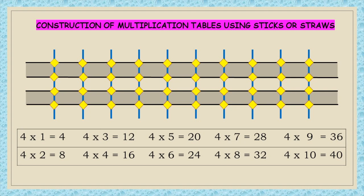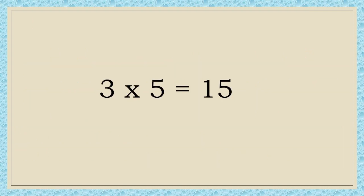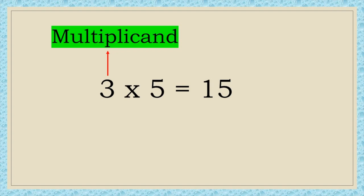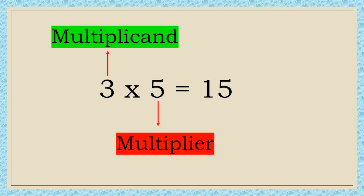Similarly, you can construct the table of five, six, and so on. Any number that is before the multiplication sign is called the multiplicand. Any number after the multiplication sign is called the multiplier. The answer is called the product.